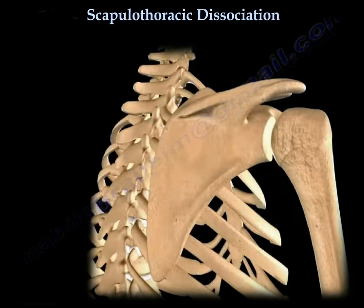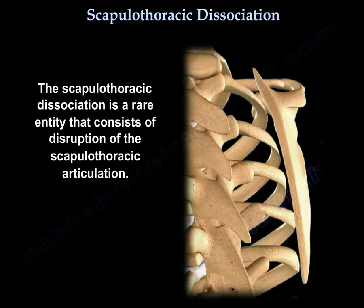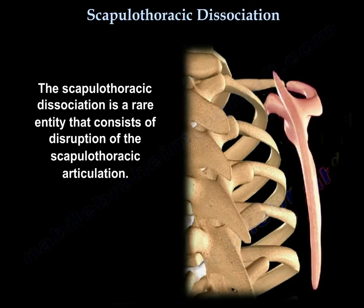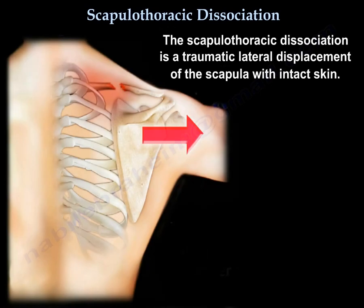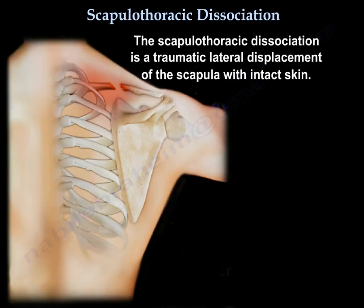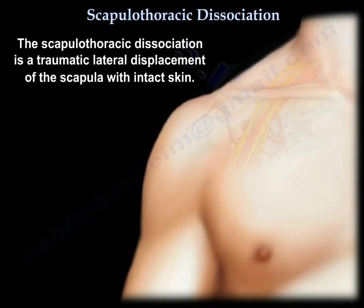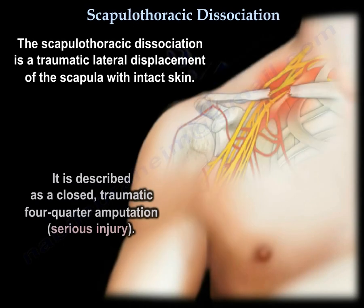Scapulothoracic dissociation is a rare entity that consists of disruption of the scapulothoracic articulation. It is a traumatic lateral displacement of the scapula with intact skin. It is described as a closed traumatic four-quarter amputation — it is a serious injury.